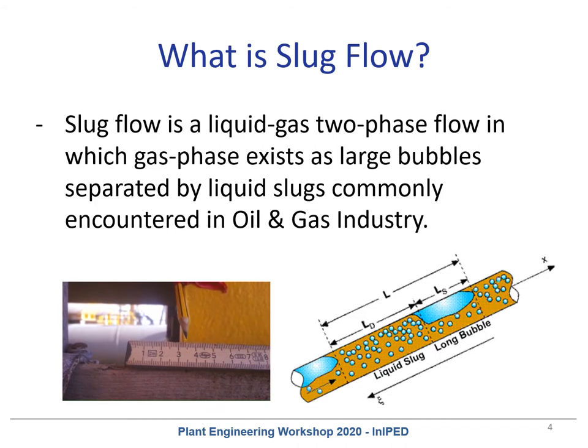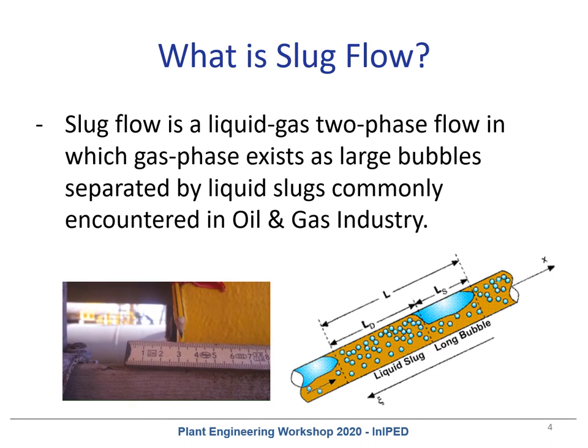You can see in the video there is a sudden movement of the piping due to slug. Sometimes the movement is small and sometimes it goes up to 15-20 mm. Slugging can happen at uneven time intervals with different magnitude depending on slug density and velocity.